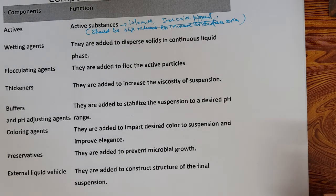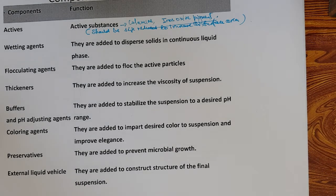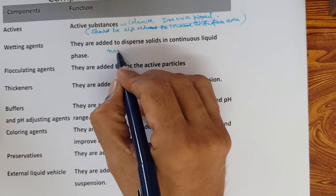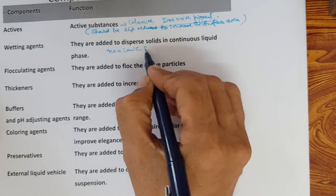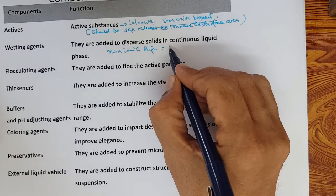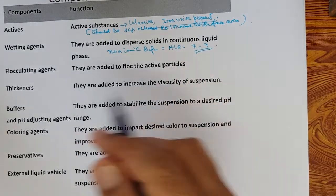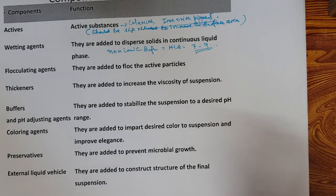Since the air globules are there, it affects the wetting of these particles. Some ingredients like glycerin, which is soluble in water, can form a coating around these particles and when added to water, they can be easily wetted. The other way of wetting is with surfactants — usually non-ionic surfactants with HLB of 7 to 9 are used as wetting agents.